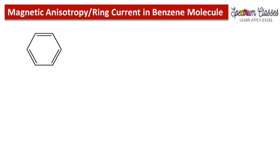Hello everyone, welcome back to Spectrum Classes. This is another video on the topic of magnetic anisotropy, and here we are going to discuss a special type of magnetic anisotropy which is also known as ring current. This kind of ring current is important in benzene or aromatic compounds.